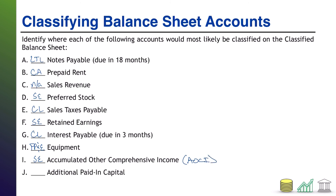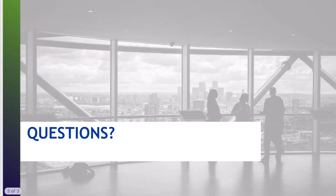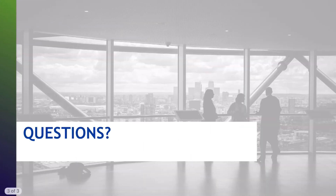Finally: additional paid-in capital. Additional paid-in capital arises when market forces push the cash you receive by issuing stock above its inherent value. That is part of your shareholders' equity as well. And that is it — hopefully you did all right, this helped you out, and I hope you join me for another video.